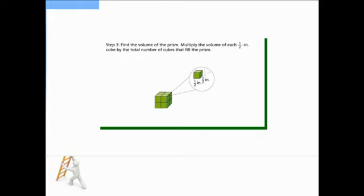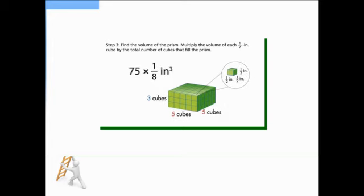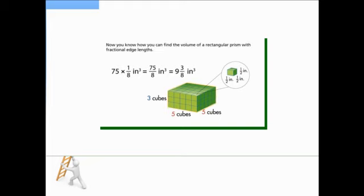Step 3: Find the volume of the prism. Multiply the volume of each 1/2-inch cube by the total number of cubes that fill the prism. The volume of the rectangular prism is 9 and 3/8 cubic inches. Be precise and use the correct units to describe area and volume. Now you know how to find the volume of a rectangular prism with fractional edge lengths.